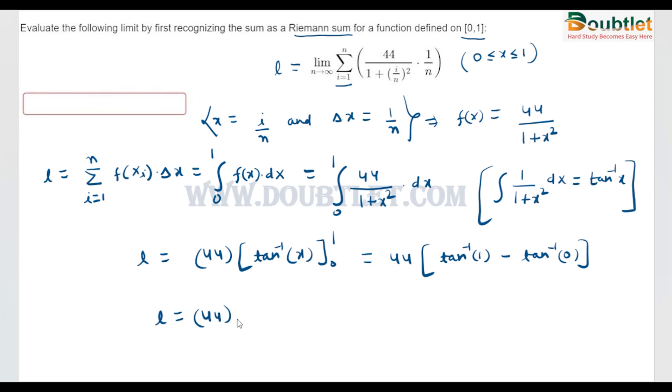So 44 into tan inverse 1, the value is π/4, tan inverse 0 will be 0, 4 will be cut by 11 times 2, so the answer will be 11π. So it is the answer.